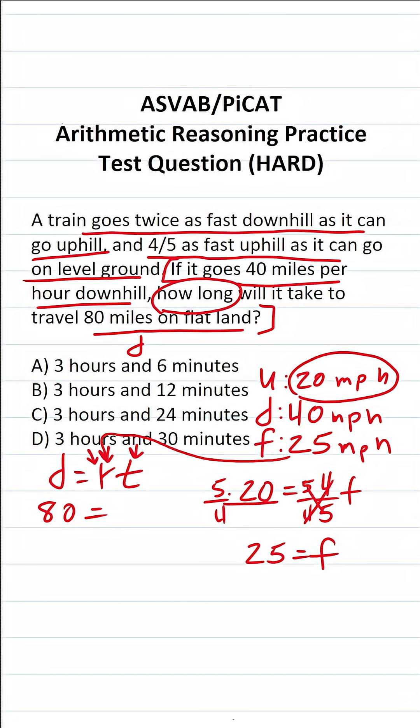Now that we know that, we can go ahead and plug that in. This becomes 80 equals 25T. We're solving for T, so divide both sides by 25. This crosses out.